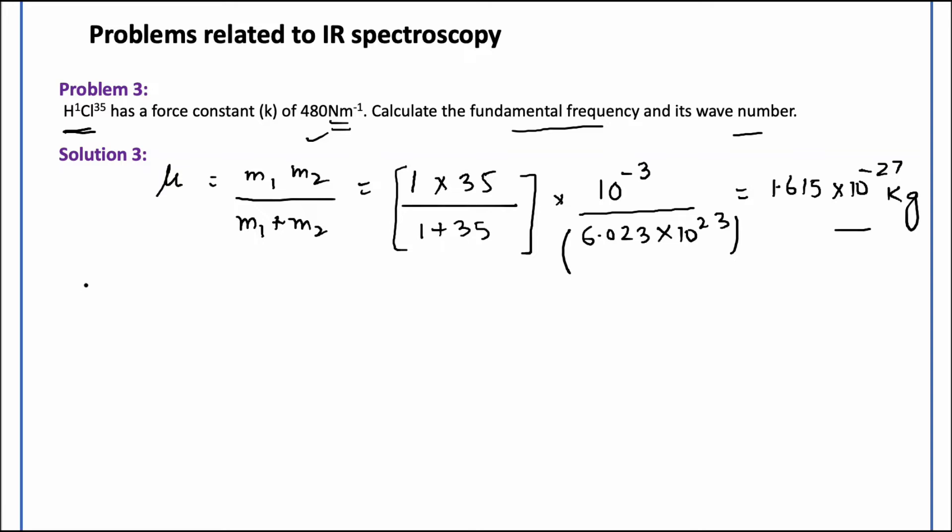Now I have got the reduced mass. I have the value for reduced mass, I have the value for k. Now the fundamental frequency and wave number is required, so it's easier for me to do the calculations. Mu is equal to 1 over 2 pi times square root of k over mu.